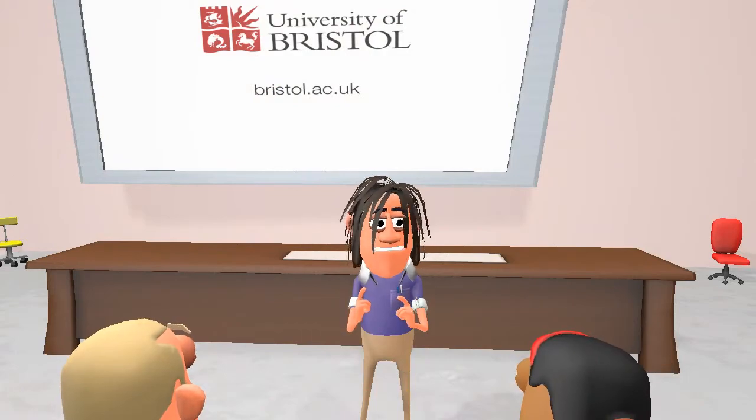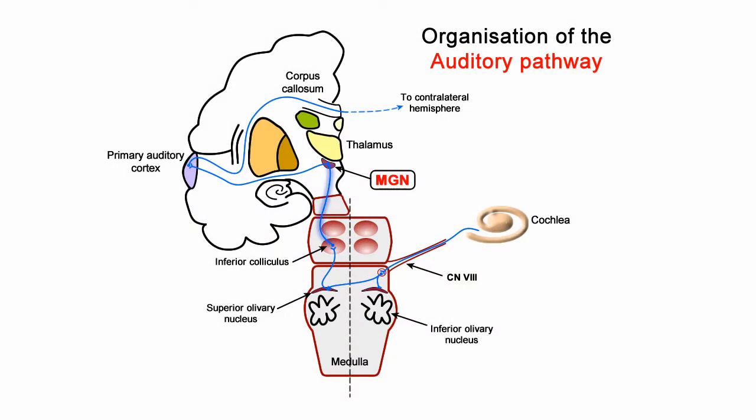I will start with the medial geniculate nucleus. This nucleus receives input from the ipsilateral inferior colliculus on the dorsal surface of the brainstem, and projects to the ipsilateral primary auditory cortex on the superior temporal gyrus via the auditory radiation. The inferior colliculus in turn receives its input from the superior olivary nucleus.